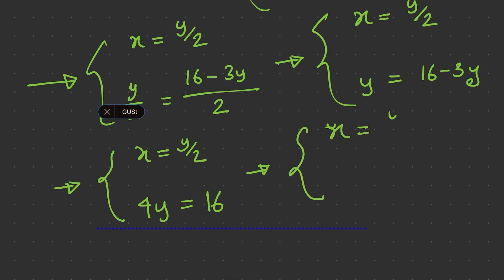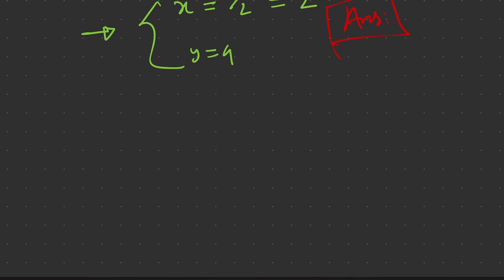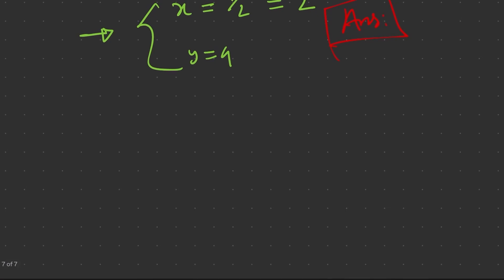From 4y equals 16 we get y equals 4. Substituting back gives x equals 2. We apply this method when both equations are simple and easy to rearrange. For these equations our first method was faster; however, let's now try the third method: elimination.